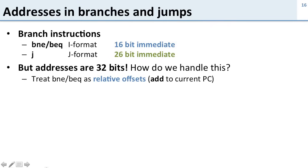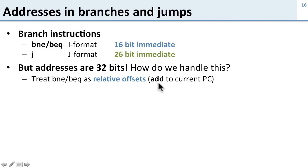For branch not equal and branch equal, we treat the immediate as a relative offset. We take the 16-bit immediate and add it to the current program counter — the current address of the instruction. This is really nice because the offset can be positive or negative, so we can jump both forwards and backwards.